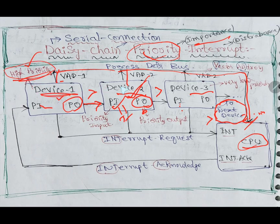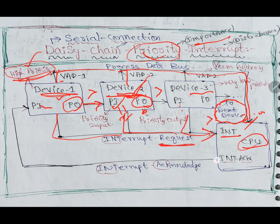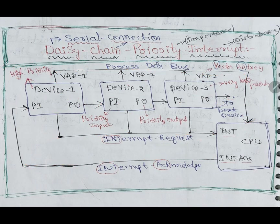According to that, priority will be given: device one has high priority, device two has a little lower priority, device three has very less priority. Daisy chain is nothing but serial connection of priority interrupt to the CPU. The device will send an interrupt request, then the CPU will send acknowledgement so that the work will be done. Very simple — daisy chain means serial priority interrupt.